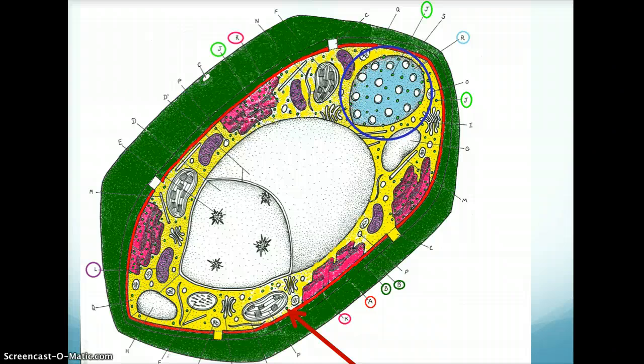The nucleolus and chromatin were not shown in the plant cell because, as you can see, it is closed, whereas in the animal cell it was cut open.